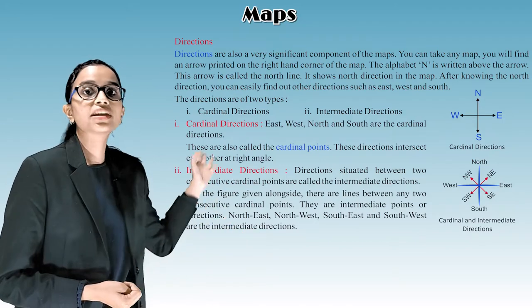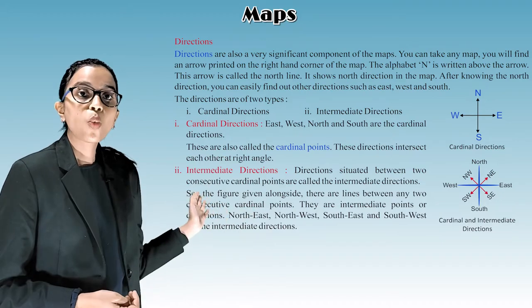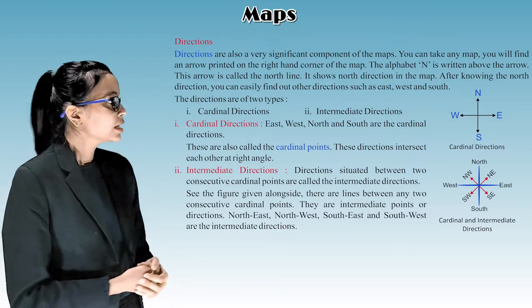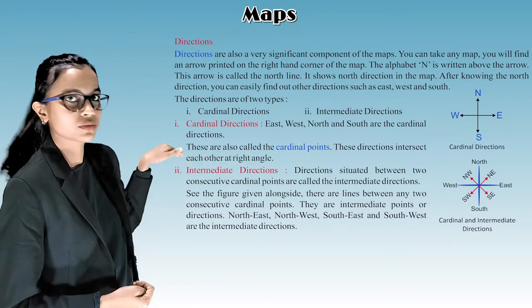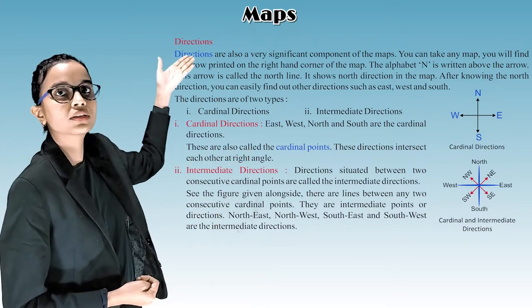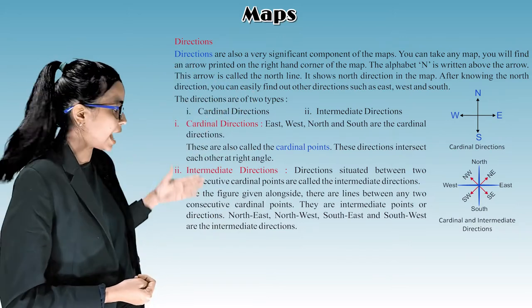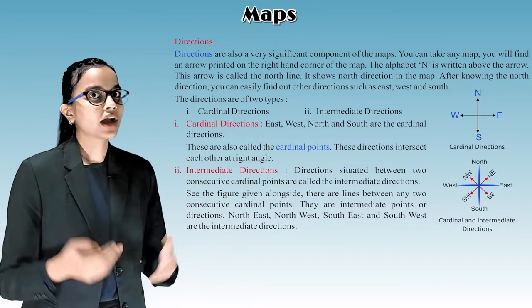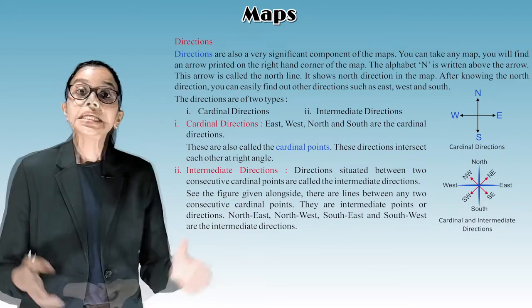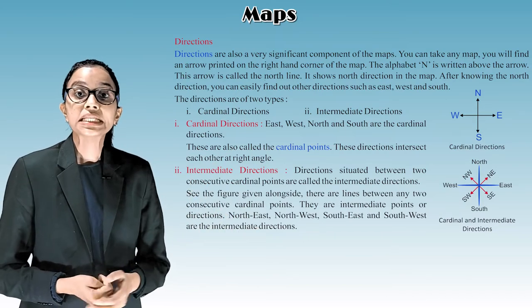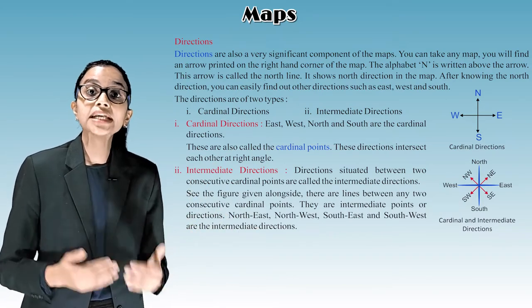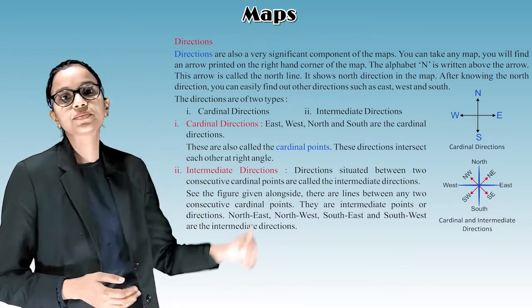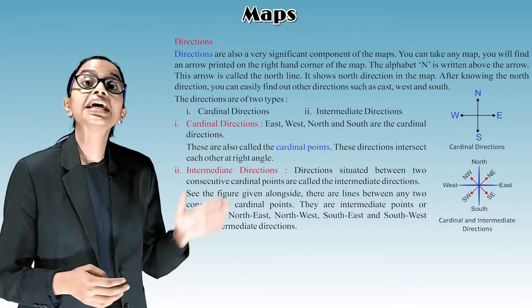Are you all able to see these two directions? So let's start with the cardinal direction. See what is cardinal direction? Are you able to see the arrows? See, in the picture there are four arrows. On the upper side north, here west, east and south. East, west, north and south are the cardinal directions. These are also called the cardinal points. These directions intersect each other at right angle, okay? That is at 90 degrees. They intersect at 90 degrees.